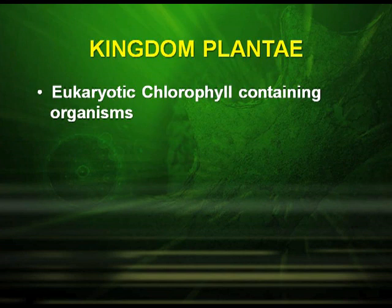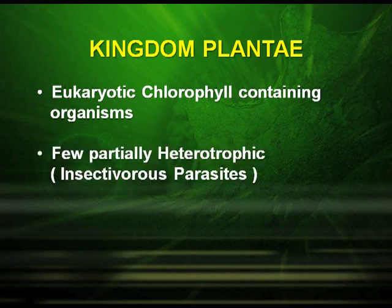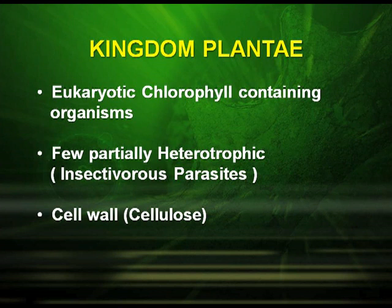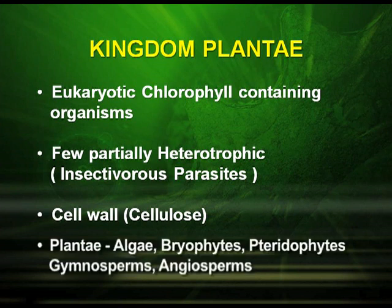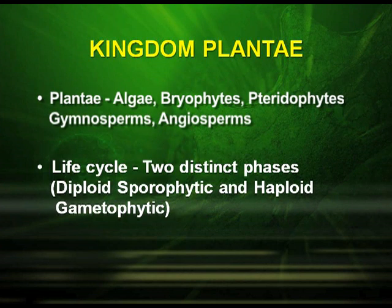Kingdom Plantae. They are eukaryotic, chlorophyll-containing organisms. A few are partially heterotrophic — example, insectivorous plants like the Venus flytrap, and parasites like Cuscuta. The cell wall is made up of cellulose. Plantae includes algae, bryophytes, pteridophytes, gymnosperms, and angiosperms. Their life cycle has two distinct phases: diploid sporophytic and haploid gametophytic. These two phases alternate with each other, and this pattern is known as alternation of generations.